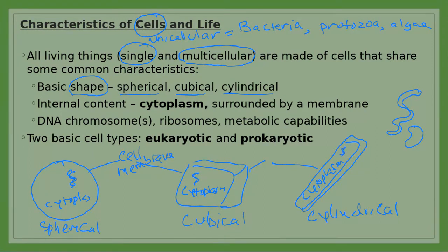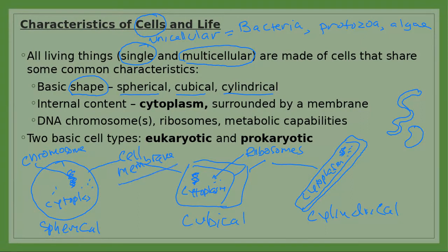The gene is located in the chromosome, so all cells will have chromosomes. Additionally, all cells have small organelles that produce proteins, called ribosomes. So the four structures present in all cells are: cell membrane, cytoplasm, chromosome, and ribosome.